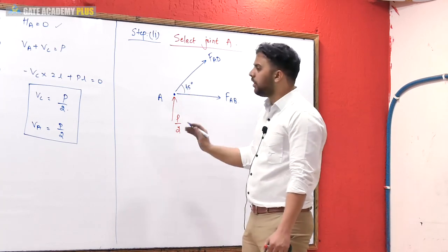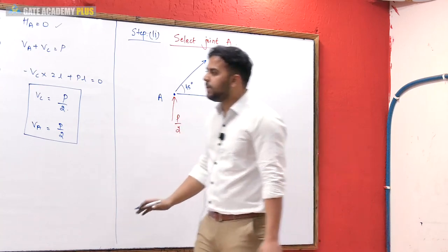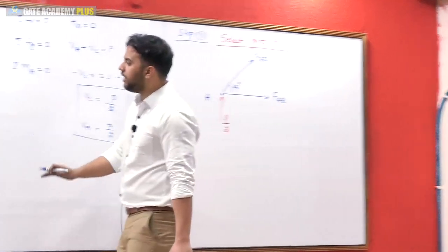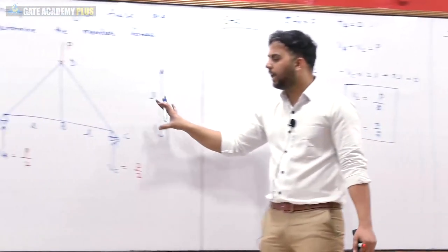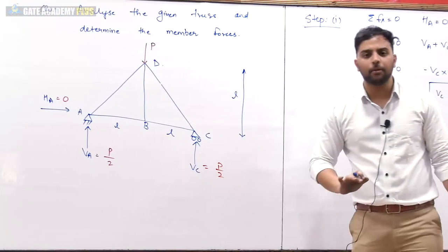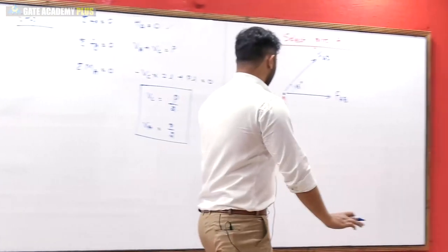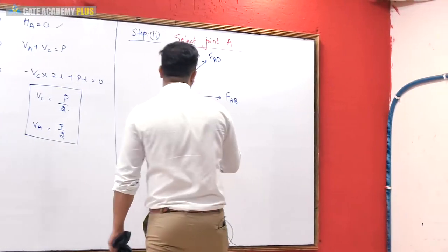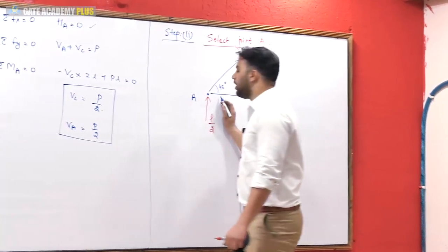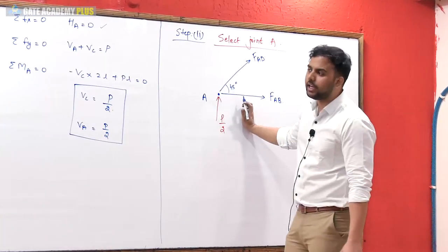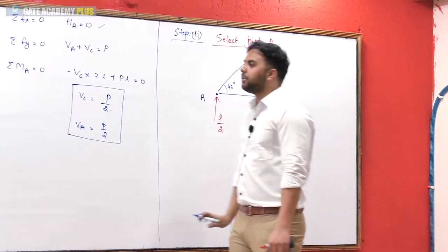The horizontal length is L and the vertical length is L, so the angle between the two members at A is 45 degrees.